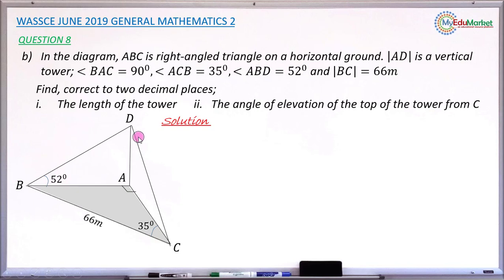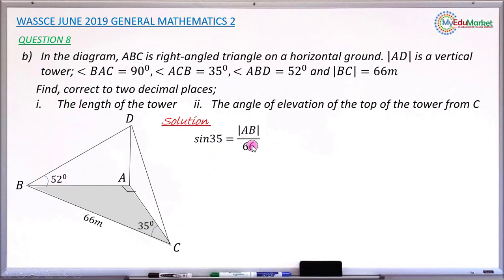To find the length of A, D — the length of the tower — it is in this triangle where I only have angle 52. So if I can find length A, B, I can apply my trig ratio with this angle and side A, B to find the distance A, D. I have angle 35 and side 66, so I can find A, B using the sine ratio, because A, B is opposite to this angle and 66 is the hypotenuse. So: sine 35° = A, B divided by 66. Cross-multiplying, A, B equals 66 multiplied by sine 35, which gives A, B as 37.86 meters.